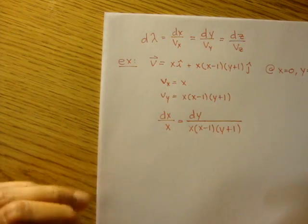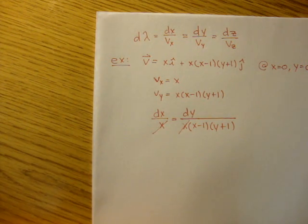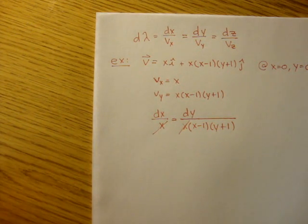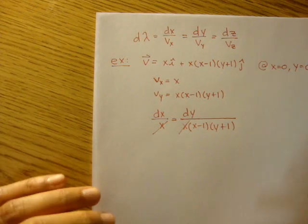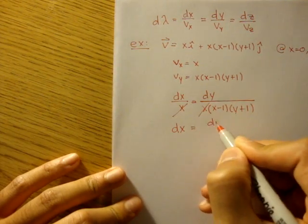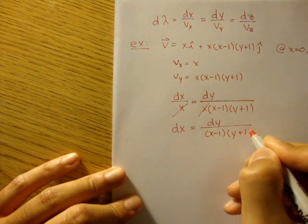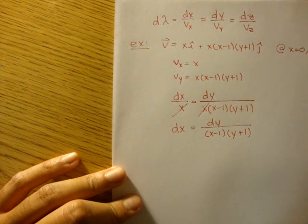The very first thing I notice is that this x and this x cancel out. That's good. We like things canceling out. And so then we're left with dx is equal to dy over x minus 1 times y plus 1.